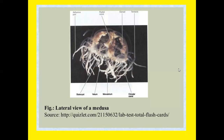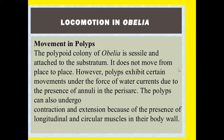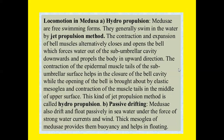Locomotion in Obelia — movement in polyps: the polypoid colony of Obelia is sessile and attached to the substratum; it does not move from place to place. However, polyps activate certain movements under the force of water current due to the presence of annuli in the perisarc. The polyps can also undergo contraction and extension because of the presence of longitudinal and circular muscles in the body wall.